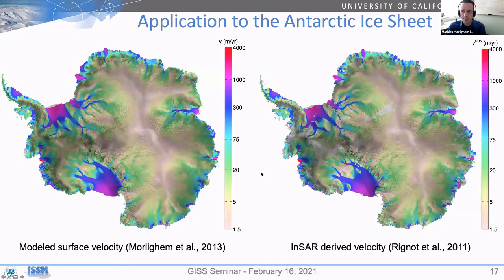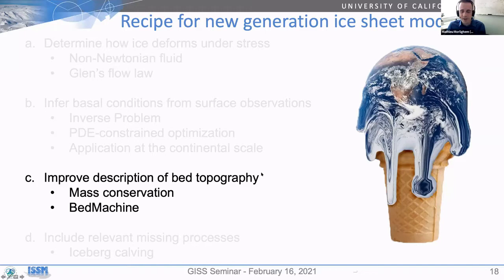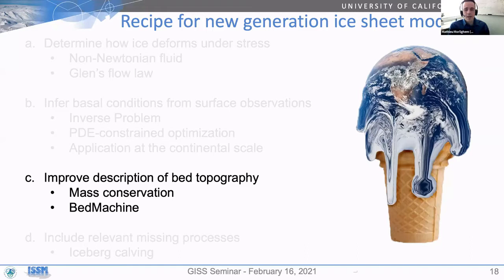We've made progress including better physics in models and combining models with observations to infer unknown boundary conditions and get ice sheet states consistent with observations. Another major area of progress is improving the description of bed topography under the ice sheets — this is what BedMachine is about, a project I've been working on for more than 10 years.